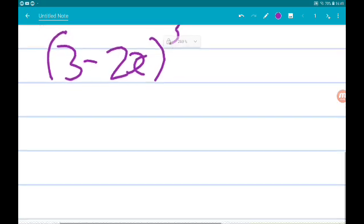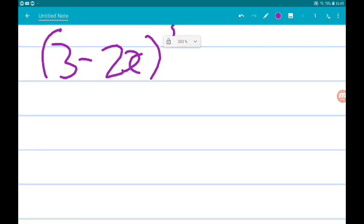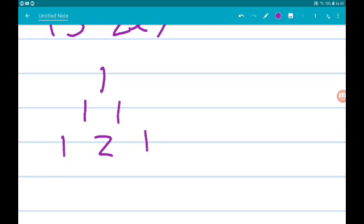So we have 1, 1, 1, 1, 2, 1, and then 1, 3, 3, 1. So it's really the fourth row, but we call the one on the top the zeroth row. So now we have our coefficients.